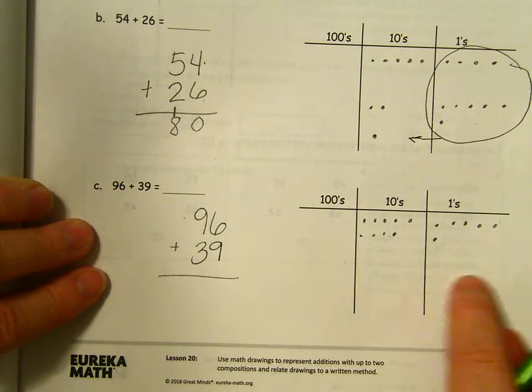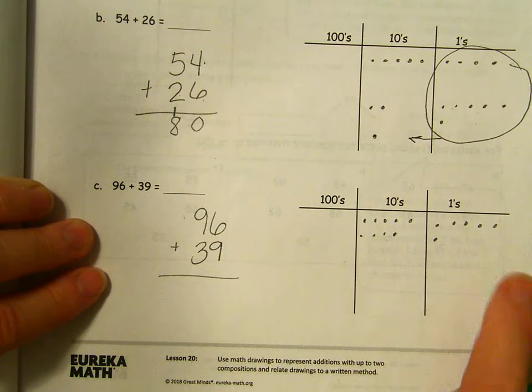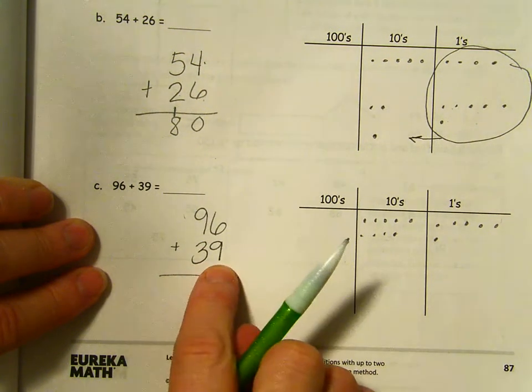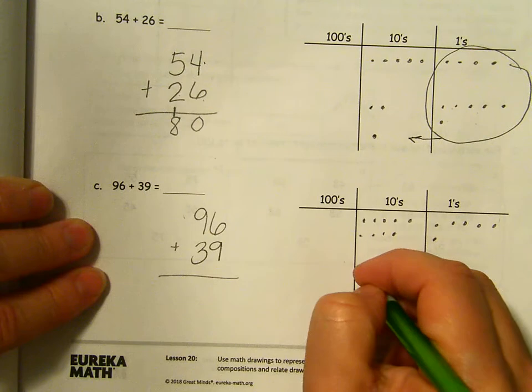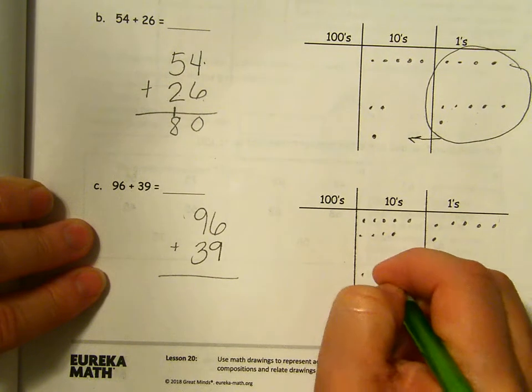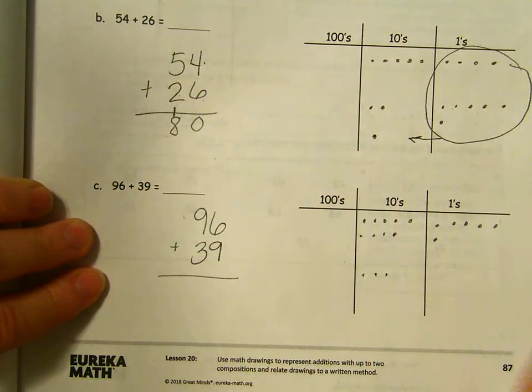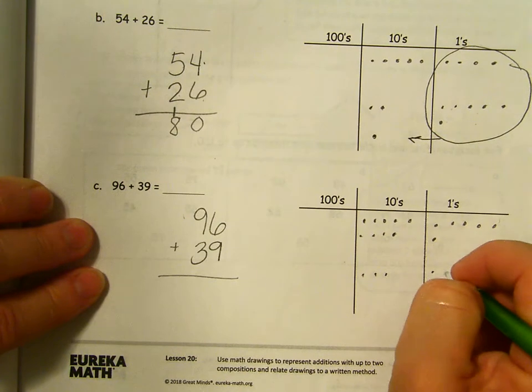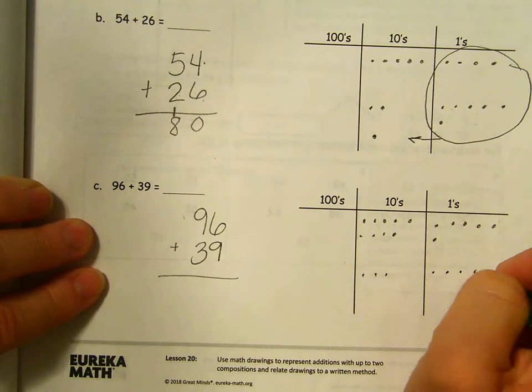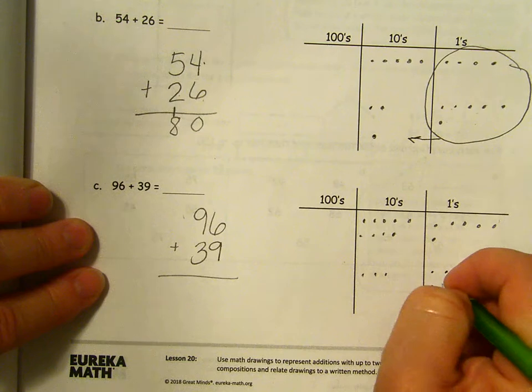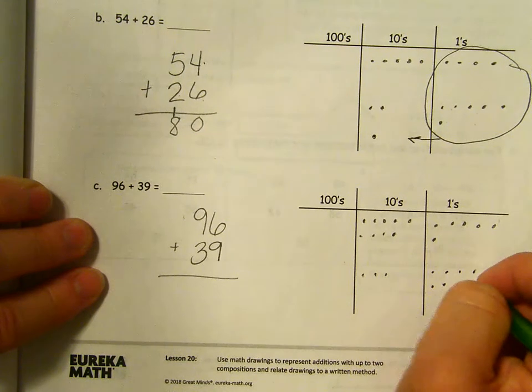Coming down here, I'm going to show 39. Three tens, nine ones. One, two, three, 10, 20, 30. And the nine ones. Three, four, five, six, seven, eight, nine.